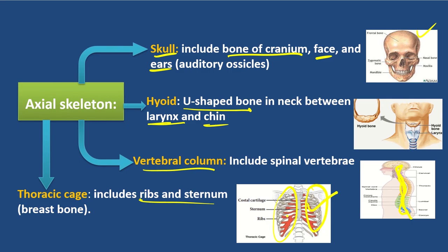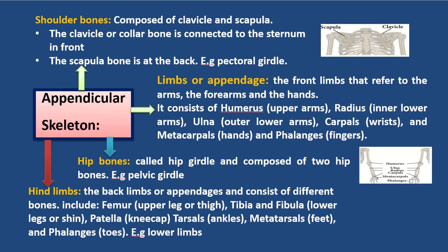This is the appendicular skeleton. This is the shoulder bone. The composite of clavicle and scapula. The clavicle, or collarbone, is connected to the front of the breast bone.